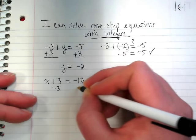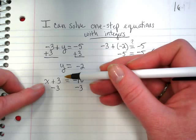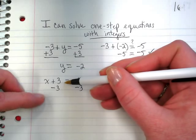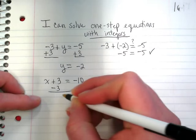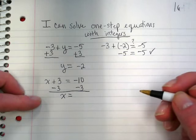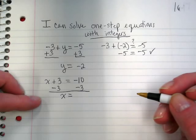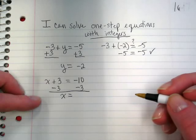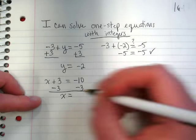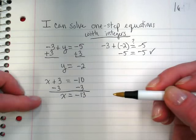So we're going to subtract 3 from both sides. Why am I subtracting 3? Because originally it was a positive. When I see addition, I do subtraction. That leaves us with x is equal to... I have a negative 10 and a negative 3. Negative 13.